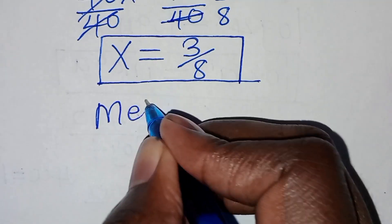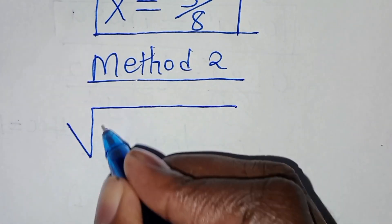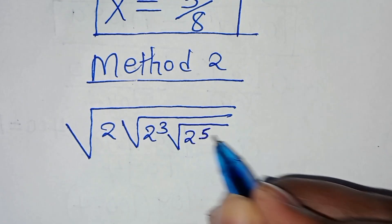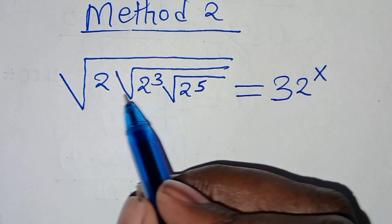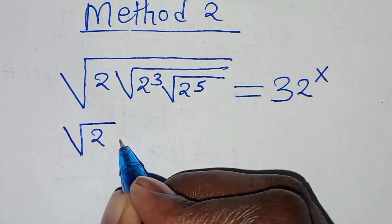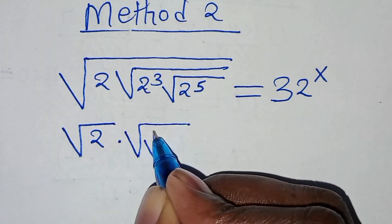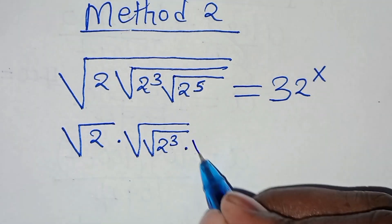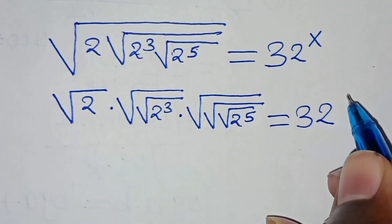Let's proceed to Method 2. We have the square root of 2 times square root of 2 to the power of 3, then square root of 2 to the power of 5, equal to 32 raised to the power of x. Now we can distribute the square root signs so that we have square root of 2, times square root of square root of 2 to the power of 3, times square root of square root of square root of 2 to the power of 5, equal to 2 raised to the power of x.